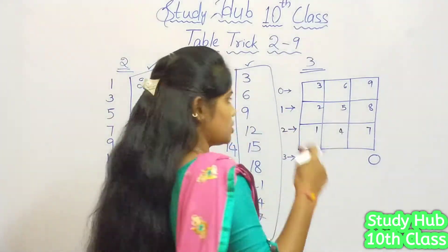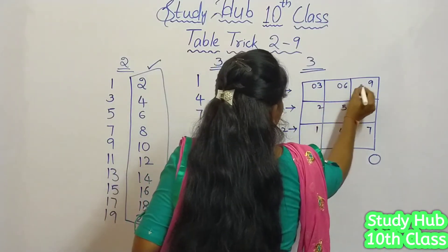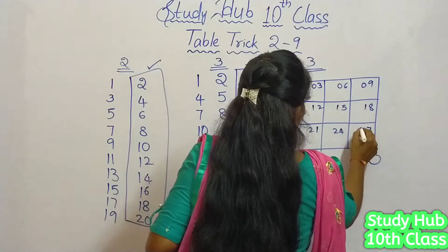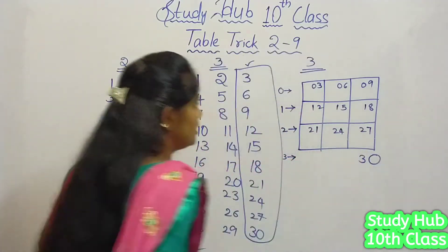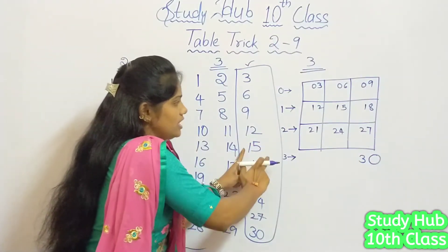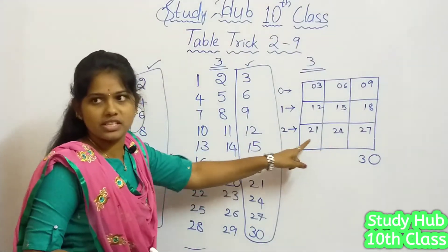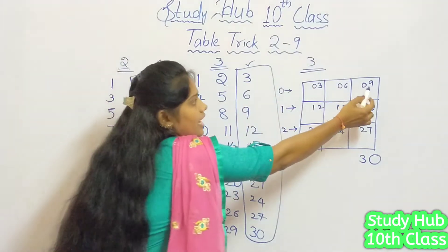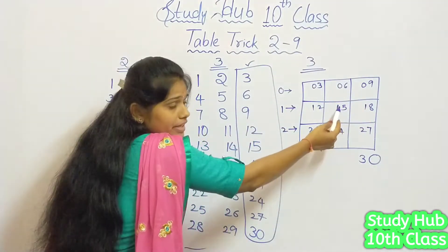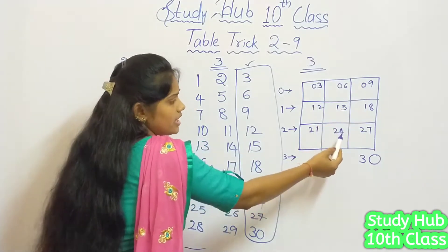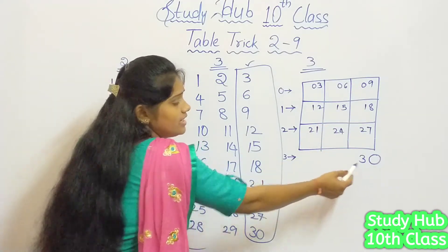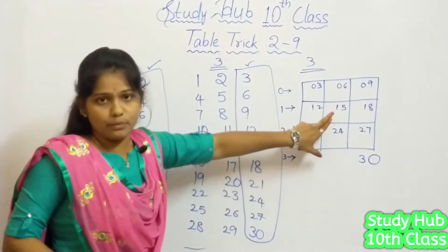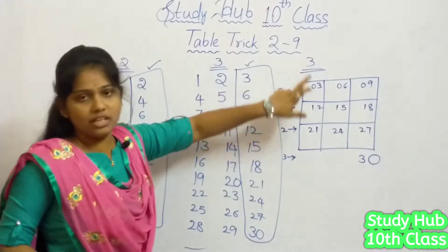So let's substitute: 0, 0, 0 for row 1; 1, 1, 1 for row 2; 2, 2, 2 for row 3; and 3 for the last position. Now observe these multiples: 3 ones are 3, 3 twos are 6, 3 threes are 9, 3 fours are 12, 3 fives are 15, 3 sixes are 18, 3 sevens are 21, 3 eights are 24, 3 nines are 27, and 3 tens are 30. This is the simple trick we used for getting the 3 multiples.